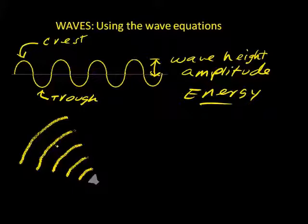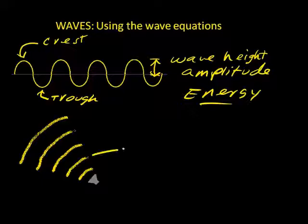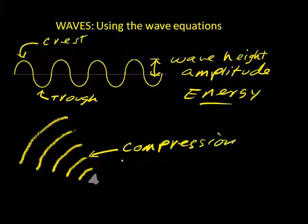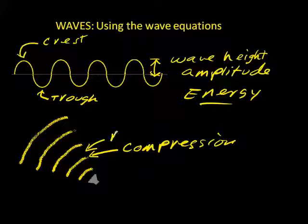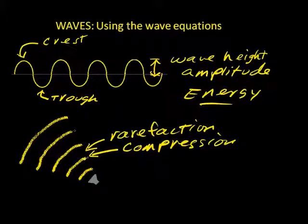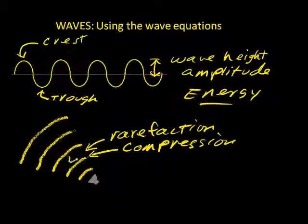Now let's talk about the longitudinal wave. For a longitudinal wave, we don't have a wave crest and a wave trough. Instead, we have alternating areas of compression and areas of rarefaction that lie between the areas of compression. Compression is where molecules or atoms are squeezed closer together, while rarefaction is where the molecules are spread further apart. Rarefaction is a low pressure area, while compression is a high pressure area.